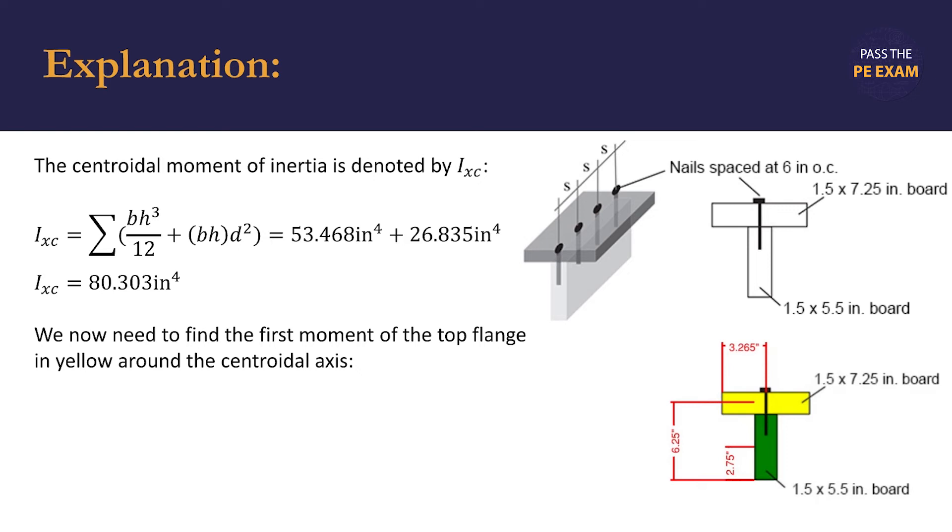We can model this by the equation q equaling the product of b, h, and d. Again, remember that d is the distance between the y-coordinate of the centroid that we calculated, b being the base width of the section, and h being the height of the section. Substituting in our values and simplifying, we have a value of 16.421 cubic inches.